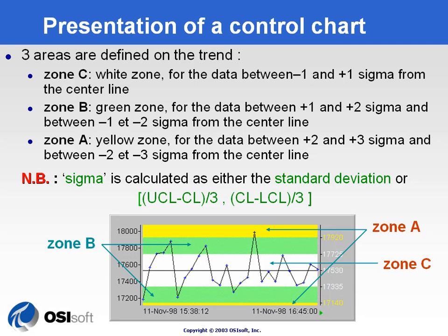On this chart we have three zones. The first zone is around the center line — Zone C — which encompasses all data falling between minus and plus one sigma from the center line. Then we have the green zone, Zone B, which encompasses data falling between plus one and plus two sigma, or minus one and minus two sigma from the center line.